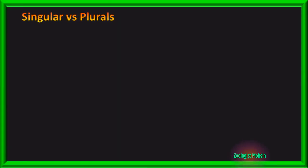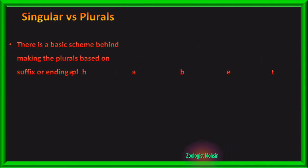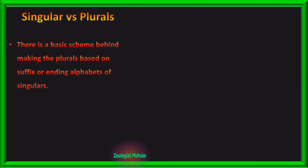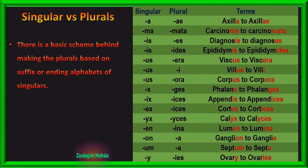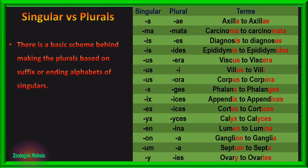How can we convert a singular word into a plural? Although there is no single universal principle, a basic scheme based on experience with medical literature can help. For example: axilla becomes axillae — the singular ending A is replaced with AE. Carcinoma becomes carcinomata — if the root word ends in MA, the plural is formed by adding TA at the end.